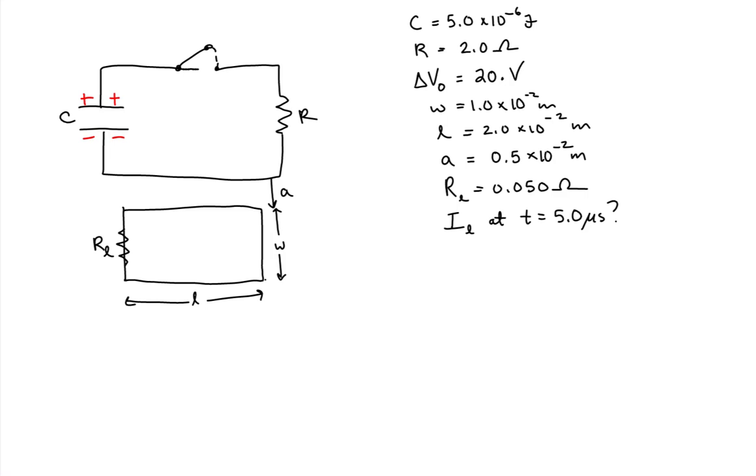And when we close the switch, that allows the capacitor to supply charge that drives a current clockwise in the circuit. Now being an RC discharging circuit, as the capacitor discharges, the current will decrease.